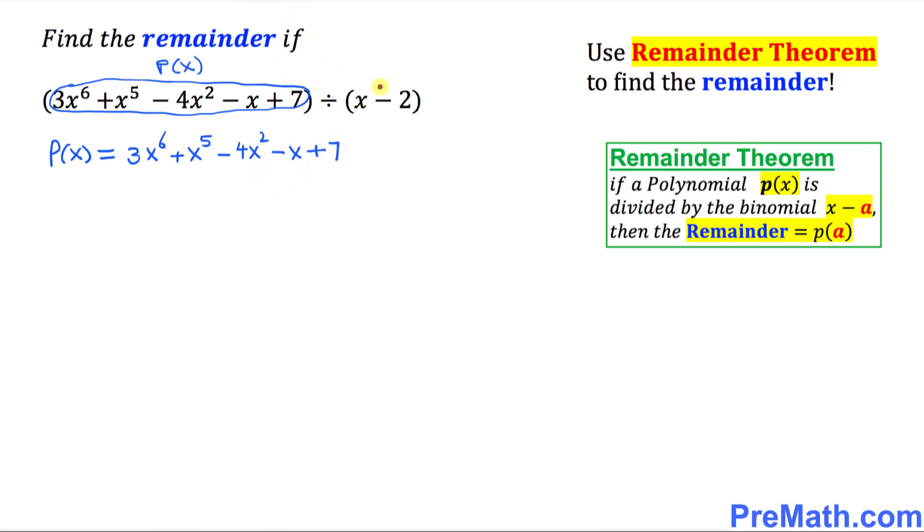The next step is to focus on the divisor, specifically the -2 part. The opposite sign of -2 is +2. We always change the sign. So we're interested in positive 2. Wherever you see the variable x, replace it with 2.